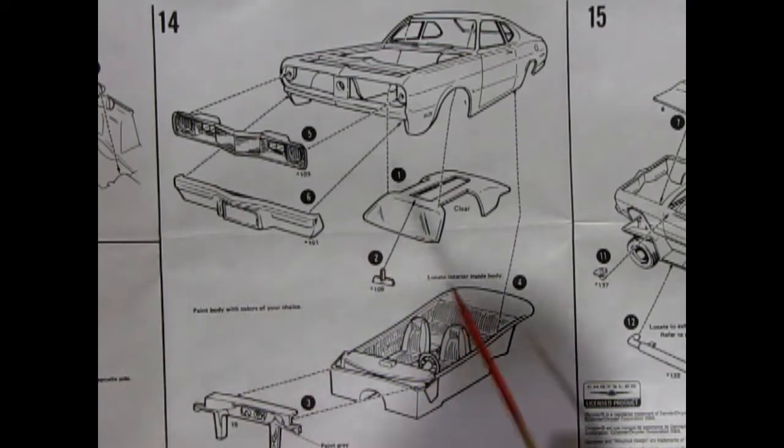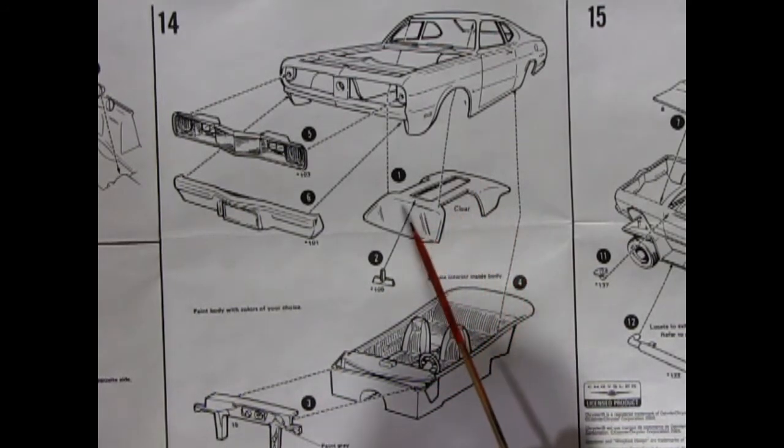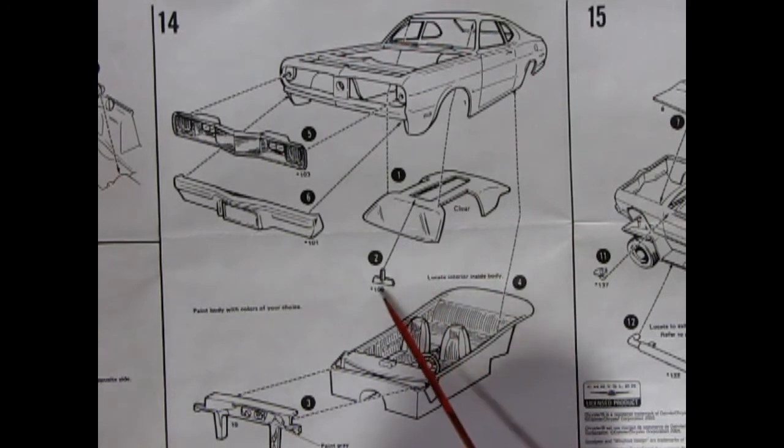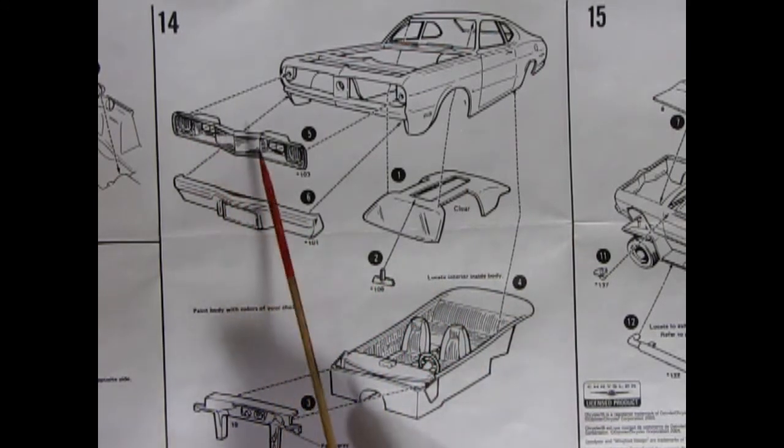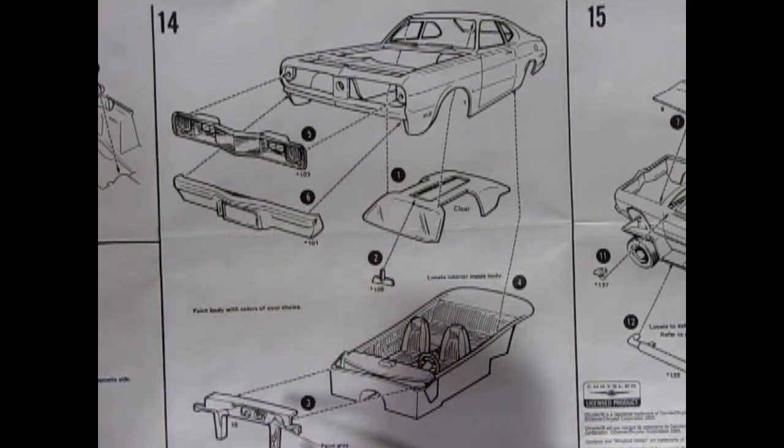Panel 14 shows our interior tub going into the body. You also add in your windows and your rear view mirror, your front grille and your bumper as well as your firewall.